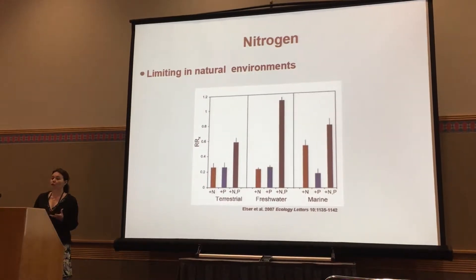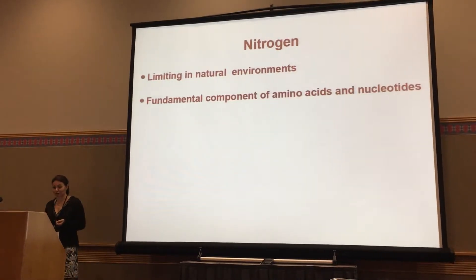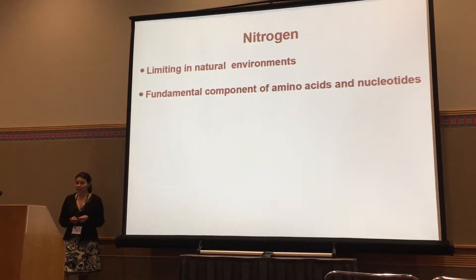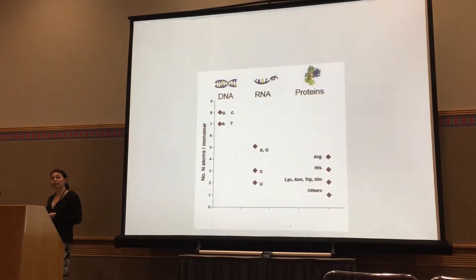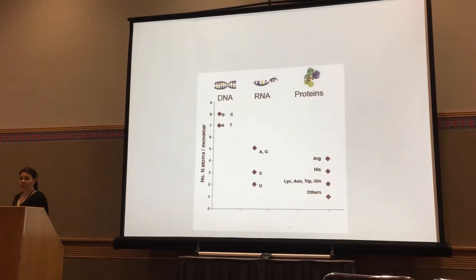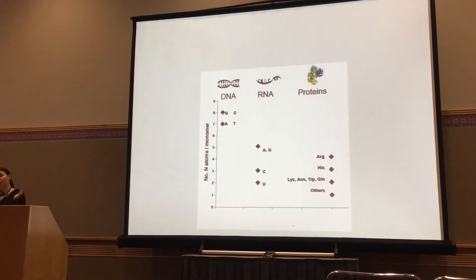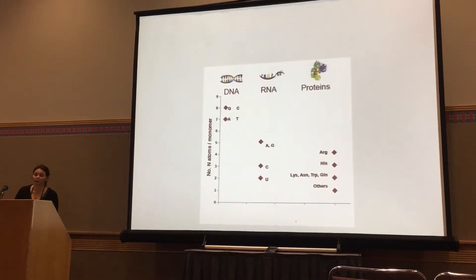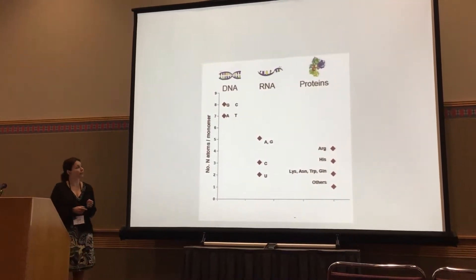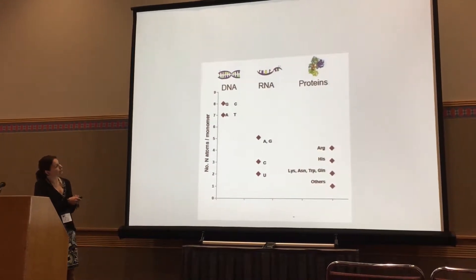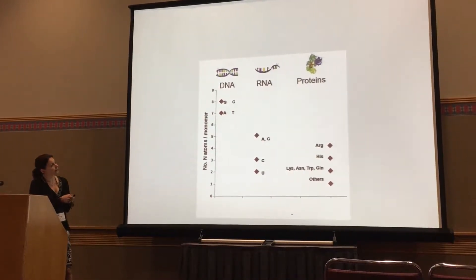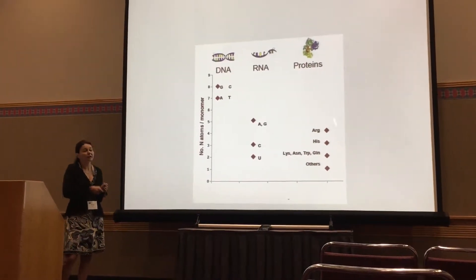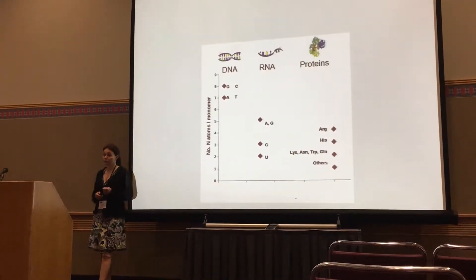Nitrogen is a fundamental component of amino acids and nucleotides. If we look at nitrogen distribution across the central dogma — the transfer of information from genes to proteins — we see variation at the DNA level with GC and AT pairs, variation at the RNA level, and even larger variation at the level of proteins when we consider the different amino acids.